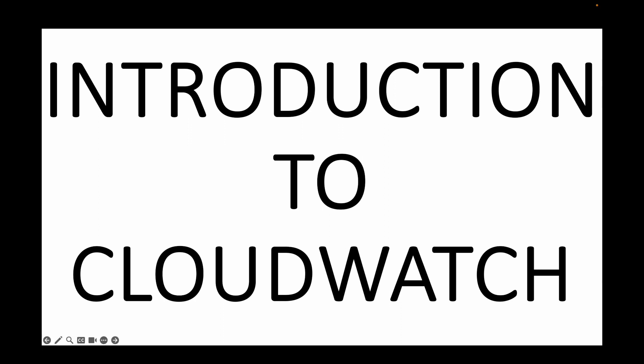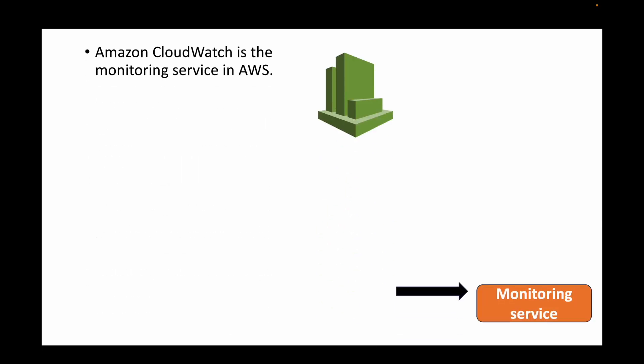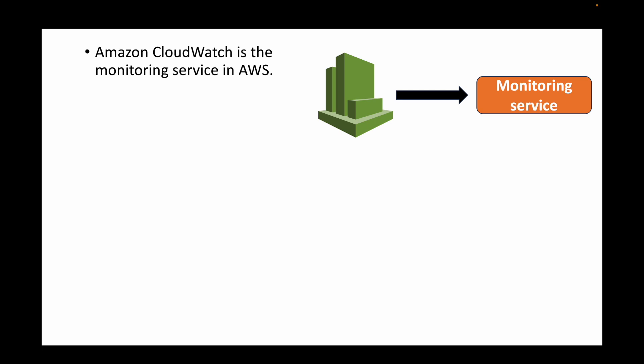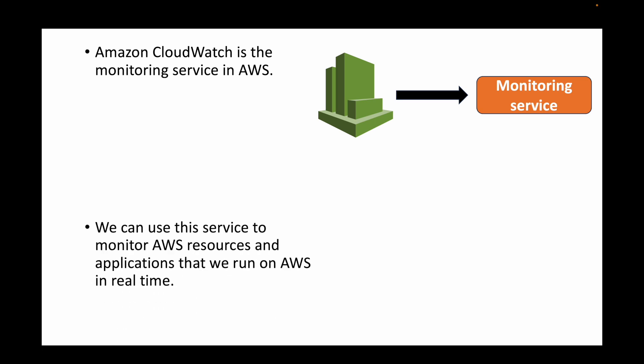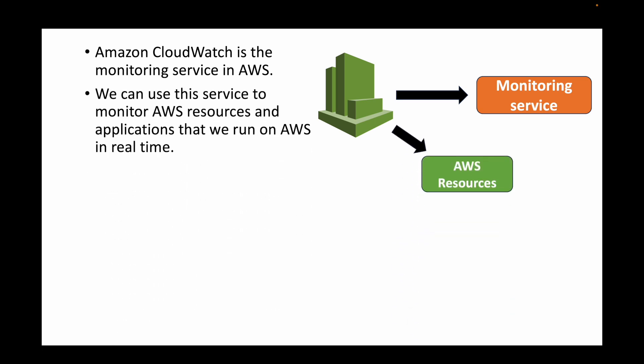Whenever we talk about monitoring in AWS, CloudWatch is the service that we have. This is mainly your monitoring service. We can use it to monitor your other AWS resources as well as applications that we are running on the AWS platform. Maybe you want to monitor your EC2 instances, your RDS instance, or any other AWS resources — we can make use of CloudWatch. We can also monitor any applications deployed on the AWS platform, all in real time.